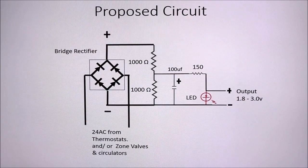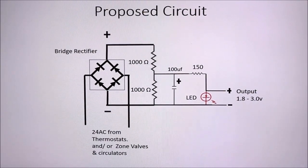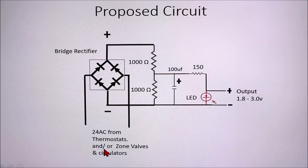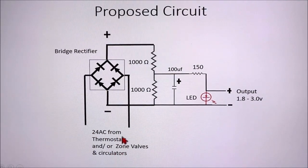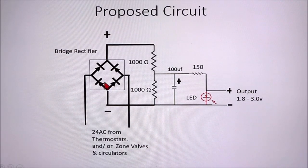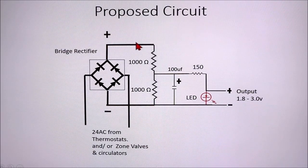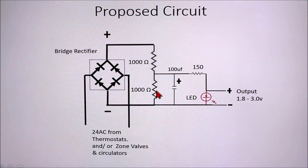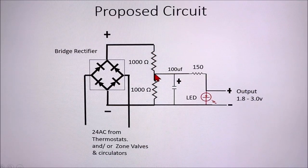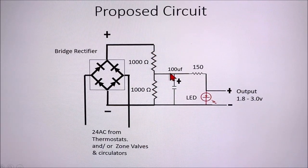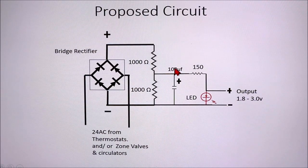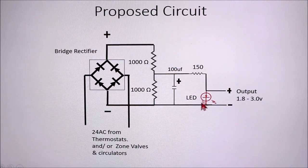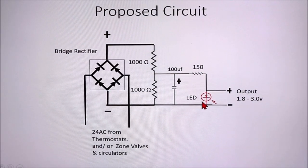So this is the circuit I came up with. It's pretty simple and easy to implement. Over here we have the 24 volts AC from the thermostats or zone valves or circulators. We run that 24 volts AC through a bridge rectifier to convert it to DC. And then we reduce the voltage with these two 1,000 ohm resistors, which cuts the voltage in half. So now the rectified DC is put through a filter capacitor, 100 microfarads, and then 150 ohm resistor and an LED.